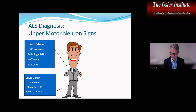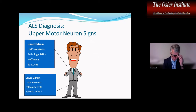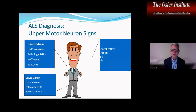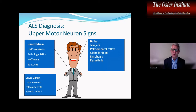As you get more lower motor neuron involvement, you can't elicit the up-going toe because of the loss of nerve supply to the extensor hallucis longus, so a Babinski is often not found in ALS patients. Bulbar signs include a jaw jerk, palmomental reflex, a sustained glabellar blink, dysphagia, and dysarthria.